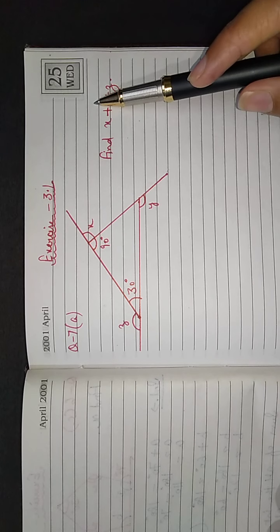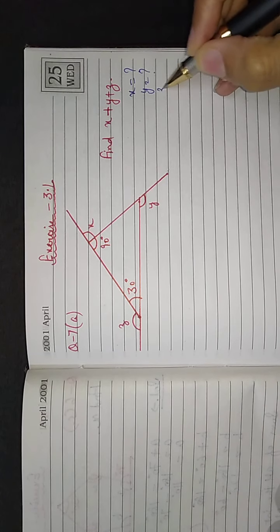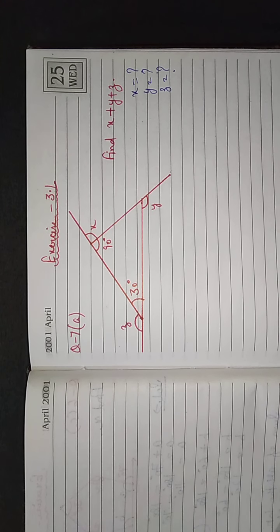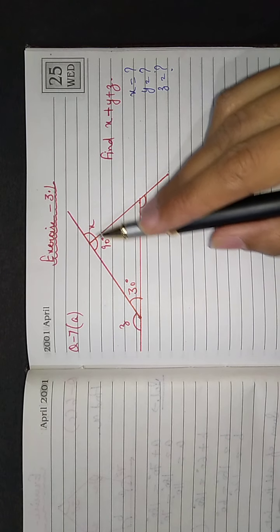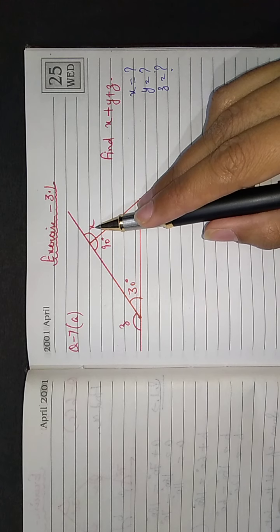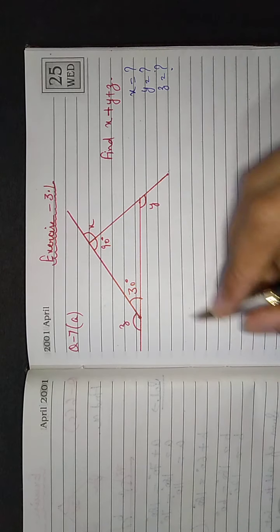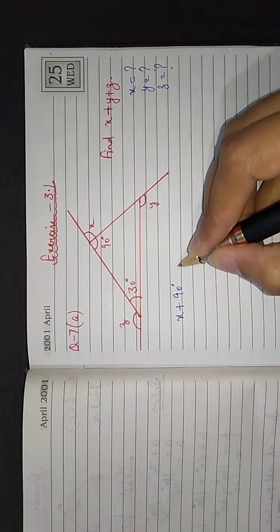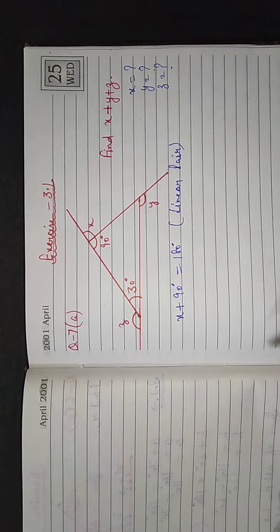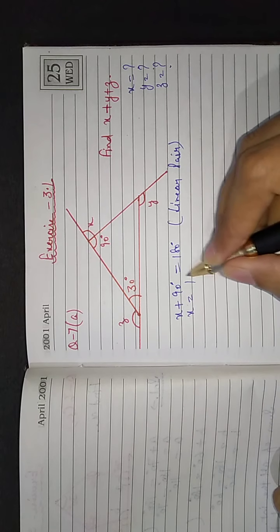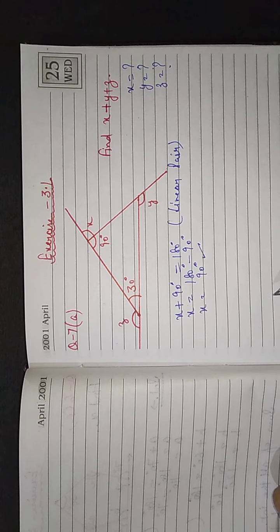Before finding x plus y plus z, we must calculate the individual values of x, y, and z. Let us go to x first. Observing carefully, x and 90 degrees are forming a linear pair, and we know that the sum of angles forming a linear pair is always equal to 180 degrees. So x plus 90 degrees equals 180 degrees. Transposing 90, we get x equals 90 degrees.